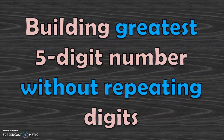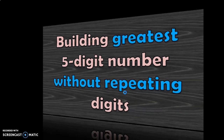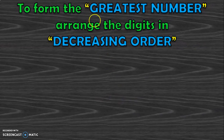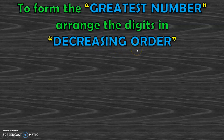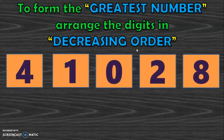Let us begin with building the greatest 5-digit number without repeating the digits. The rule to form the greatest number is to arrange the digits in descending order — decreasing order, or from big to small. Here, we are given 5 digits: 4, 1, 0, 2, and 8. We will have to form the greatest 5-digit number using these 5 given digits, by arranging them in decreasing order.